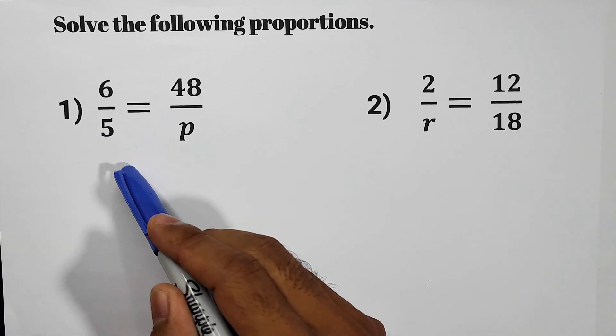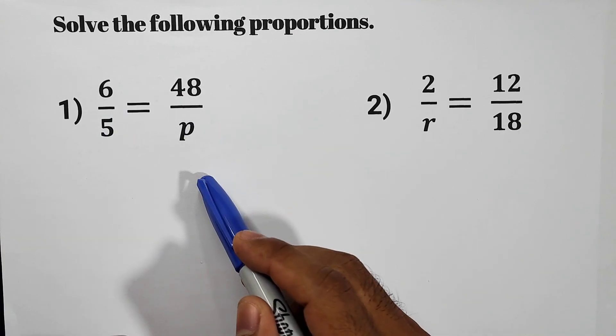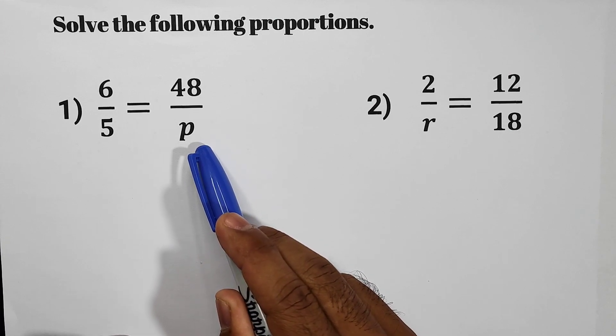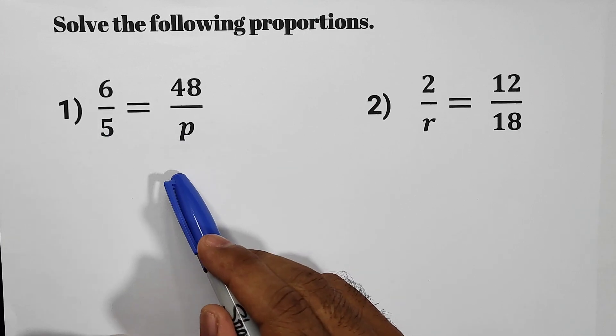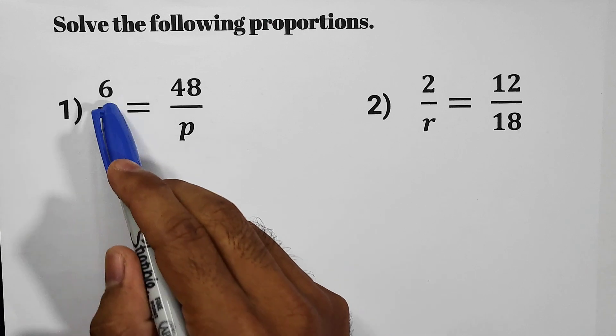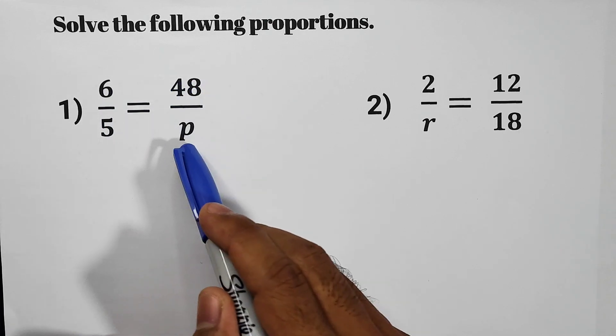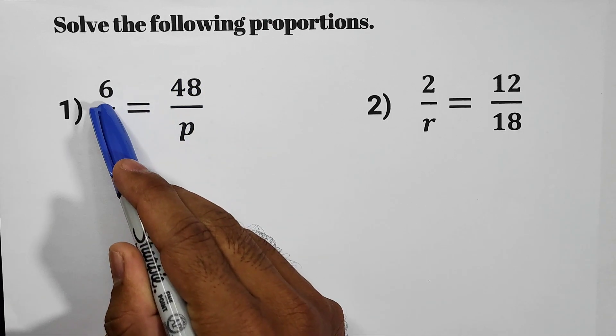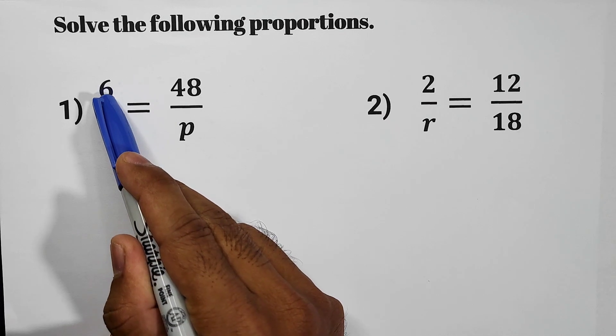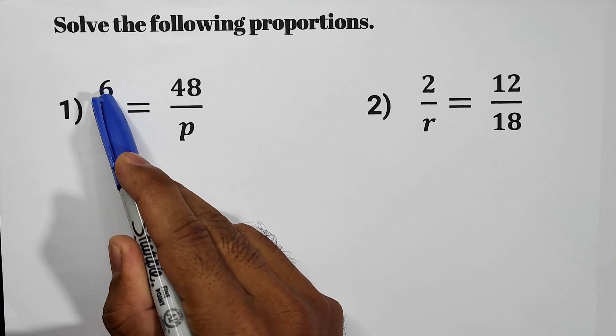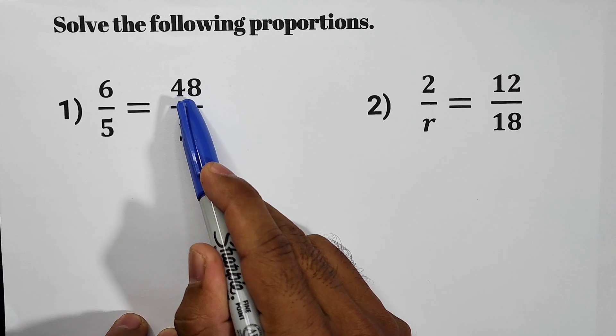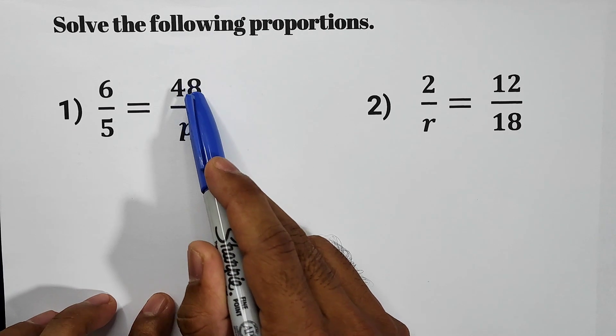6 over 5 is equal to 48 over P. The unknown is P. In this item, we can use the relationship of the numerators to find the unknown P. Numerator 6, what will you do to make it 48? So what is the relationship of 48 and 6?